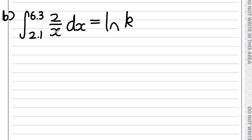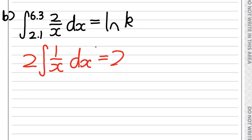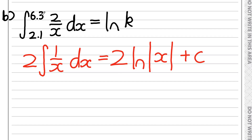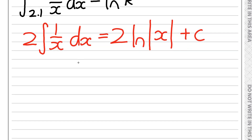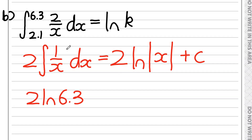We need to find what k is, so this is just a basic integration question. Starting by integrating 2 over x, I'll take the 2 out of the integral, giving 2 times the integral of 1 over x. Integrating 1 over x gives the natural log of the modulus of x. Substituting in the limits 6.3 and 2.1, we get 2 times the natural log of 6.3 minus 2 times the natural log of 2.1. We don't need the modulus sign since both values are positive.